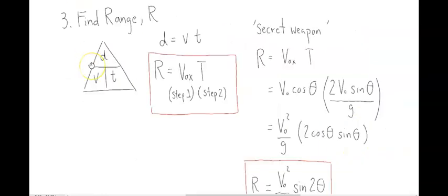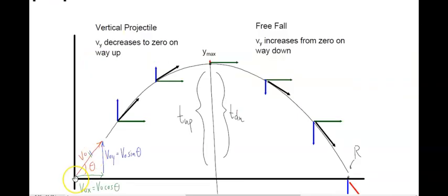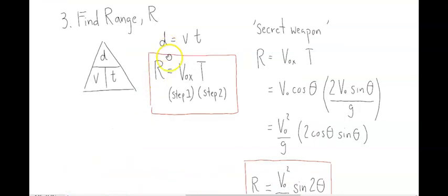The next variable that's often asked for is the range, or the distance from launch to landing. Here we use equation 1, d equals v times t. And since the d is the range, and the v is the sideways speed, the component vox, the horizontal component from step 1, multiplied by the time of flight from step 2. Range equals vox times time.